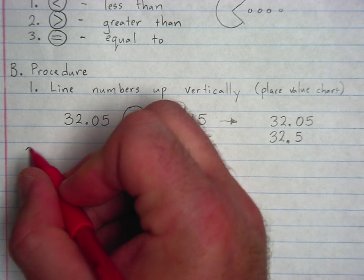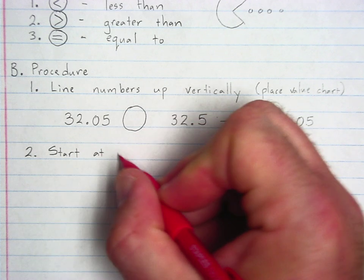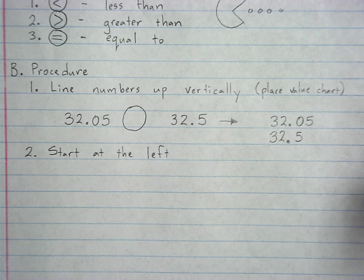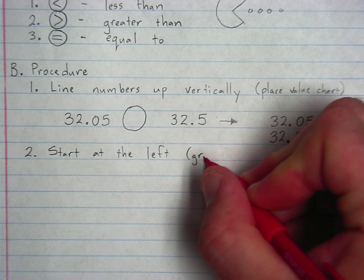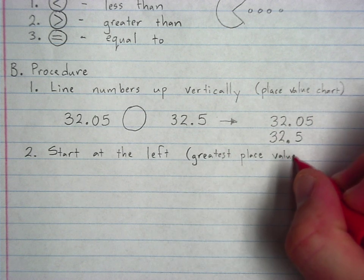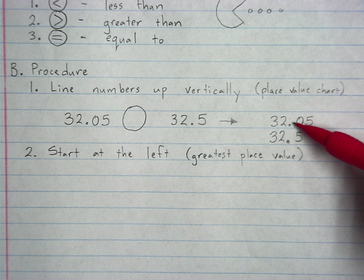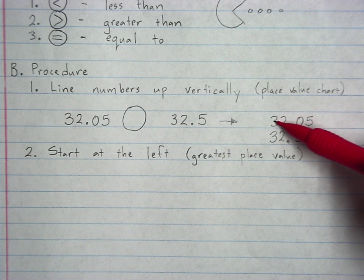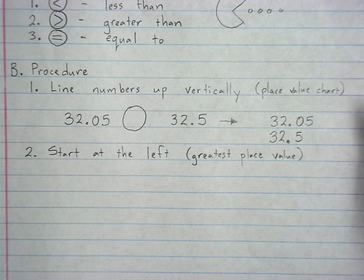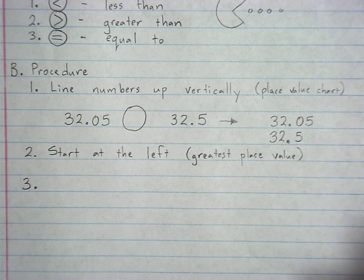Okay. Now, once that's done, step two, you are going to start at the left. You are going to start at the greatest place value. Now, looking at the numbers from before, the greatest place value. This goes out to the tens. So, that's where we're going to start. We'll start there on the left. Now, I'll put step three. And then I'm going to rewrite the numbers again. We'll go through the whole thing.